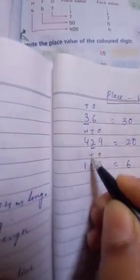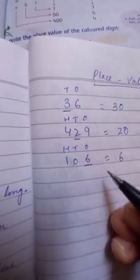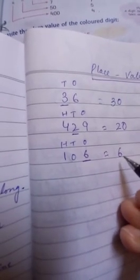Write down this 6. Do we have any digit after 6? No, we don't have. So, we have the place value of 6 in 106 is only 6. We can also check by writing 1's, 10's and 100's on the top. So, 6 in 106 is under the 1's place. So, it's only 6. Right?